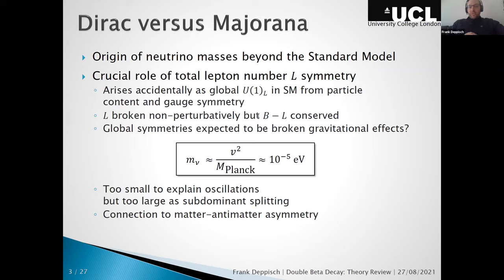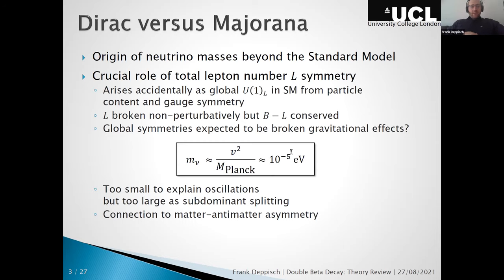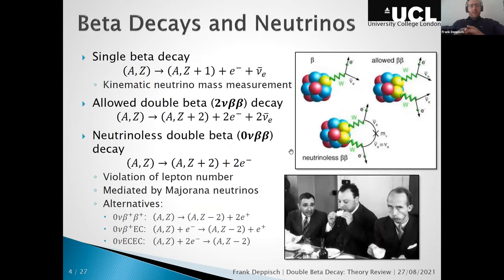Leptogenesis requires lepton number violation from new physics, which can also generate neutrino masses. One can even write down a neutrino mass from the Planck scale due to gravitational effects breaking global symmetries, giving something of order 10⁻⁵ eV. But this doesn't really work — it's too small to explain oscillations and yet too large as a subdominant splitting, since a 10⁻⁵ eV mass splitting would have shown up in oscillations.